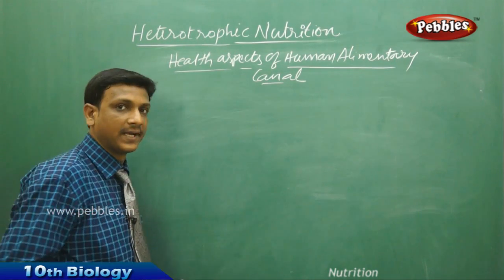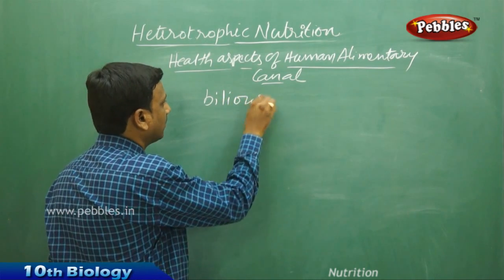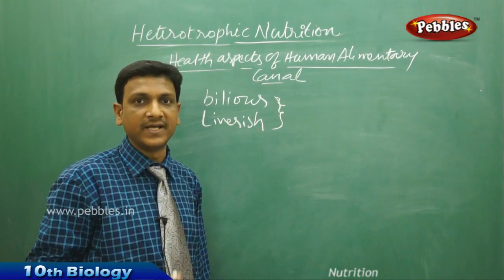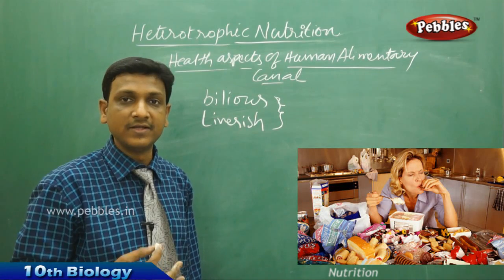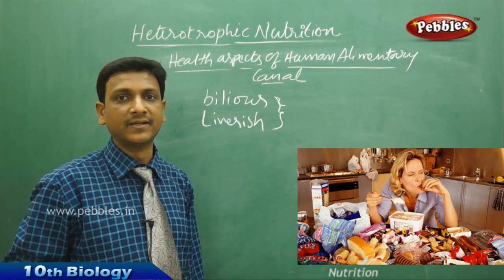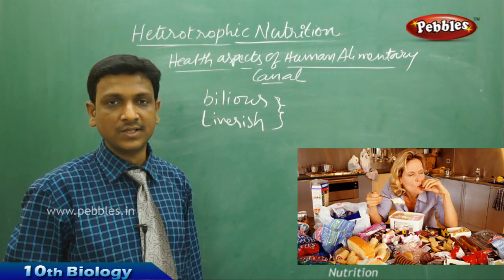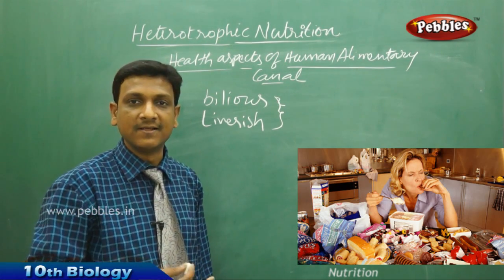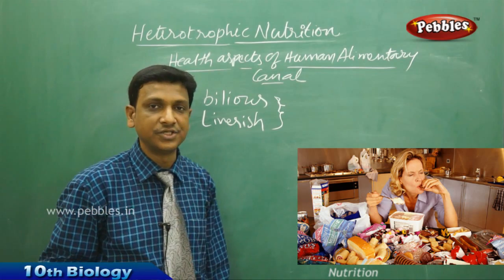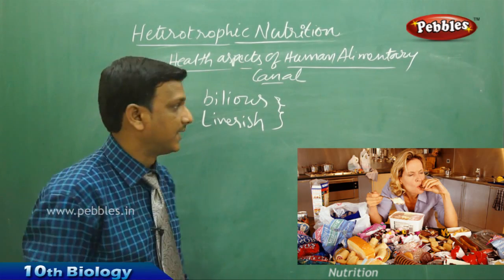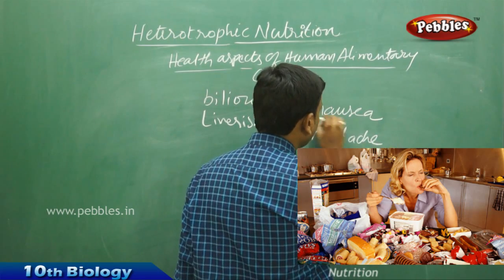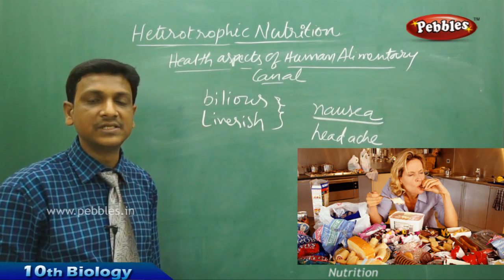The second kind of disturbance is when people feel bilious or liverish. This happens when people take rich, fatty meals over a long period of time. The excess fat and nutrients accumulate in the liver, which is the storehouse of food materials. This leads to a bilious or liverish condition causing nausea and sometimes headache.